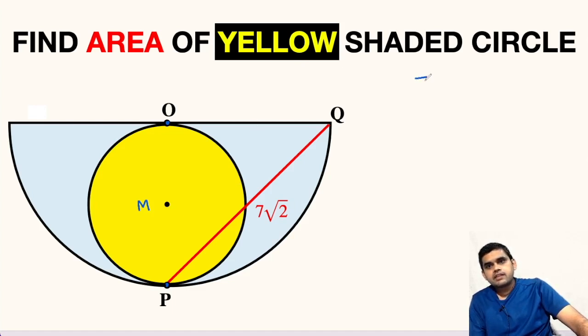Area of any circle is given by the formula pi times square of its radius. So if we are able to find the radius of this yellow circle, we can find its area.